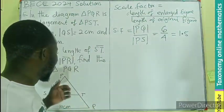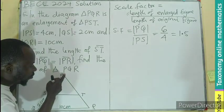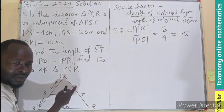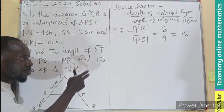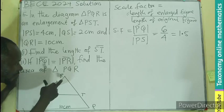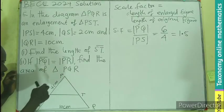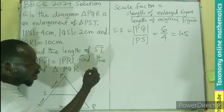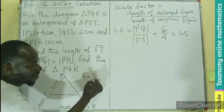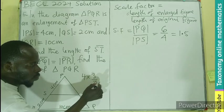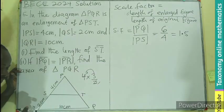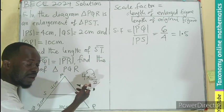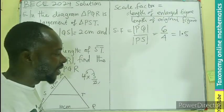So if I want this side PR, I only have to multiply whatever value I have here by 1.5. Let's check it out. If I'm looking for PQ, I only multiply PS by 1.5. And what is 1.5? 3 divided by 2. That gives us 6. Do we get it? So the measurement times the scale factor gives us the length of the enlarged figure.